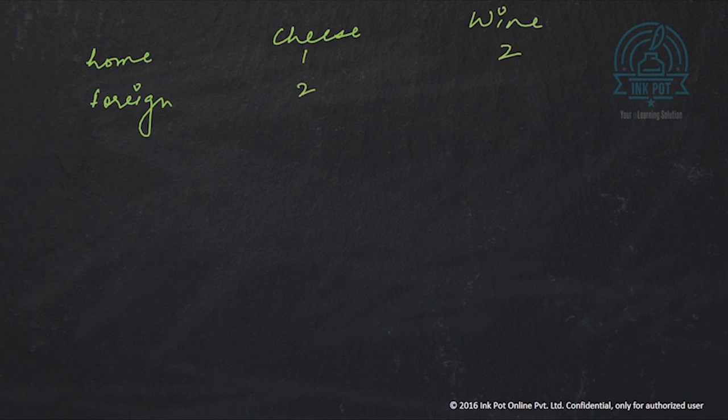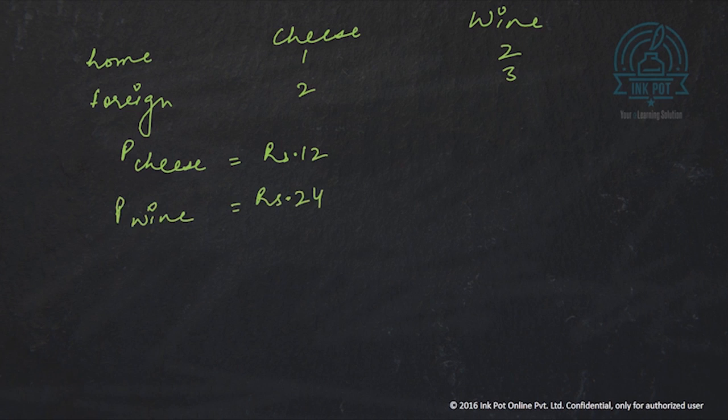I'm saying price of cheese is Rs.12 but the price of wine is let's say double. It is Rs.24. Then what is W and W star? So like we said, 1 hour in the home country can produce 1 unit of cheese which is worth Rs.12. So W is Rs.12.